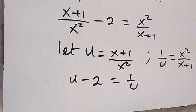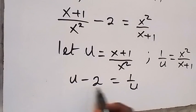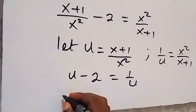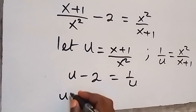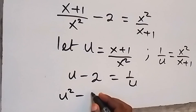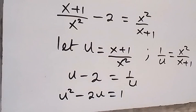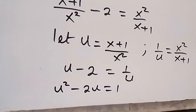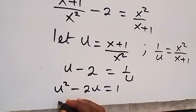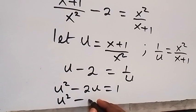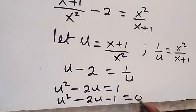Then, we can clear the fraction by multiplying through by u, such that we have u squared minus 2u equals to 1. And when we take 1 to this side so as to form a quadratic equation, we have u squared minus 2u minus 1 equals to 0.